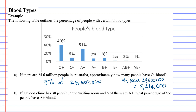Question B: If a blood clinic has 30 people in the waiting room and eight of them are A positive, what percentage of the people have A positive blood?